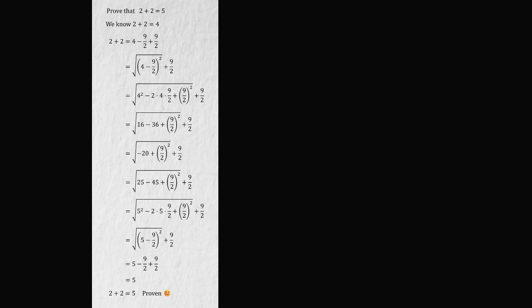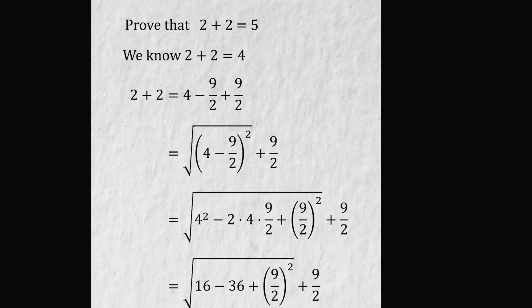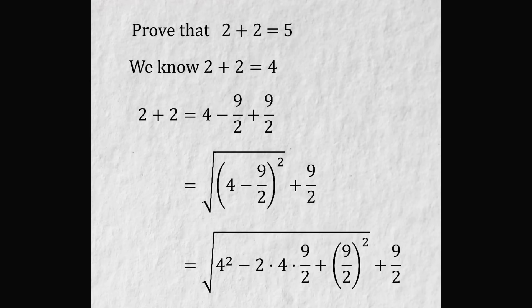Let's go through this supposed proof line by line. Prove that 2 plus 2 is equal to 5. We know 2 plus 2 is equal to 4. 2 plus 2 equals 4 minus 9 over 2 plus 9 over 2. This equals the square root of the square of the term (4 minus 9 over 2), plus 9 over 2.